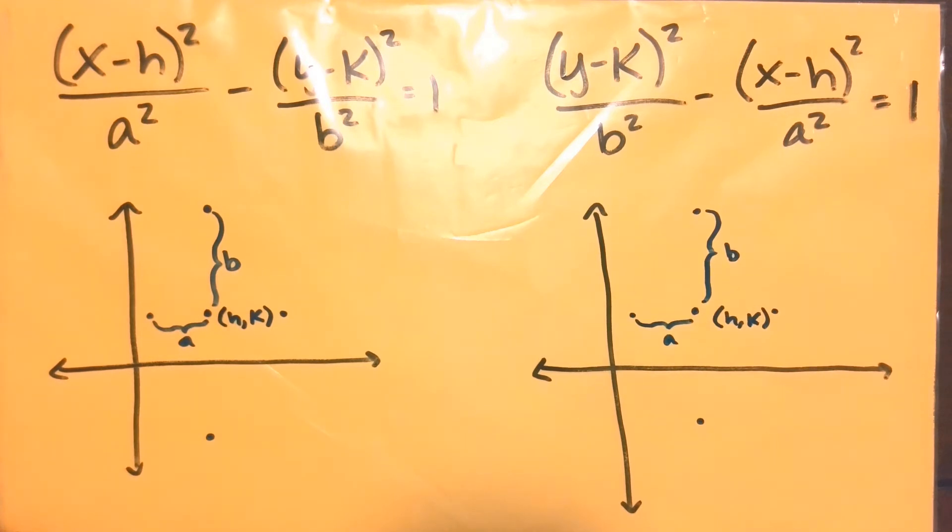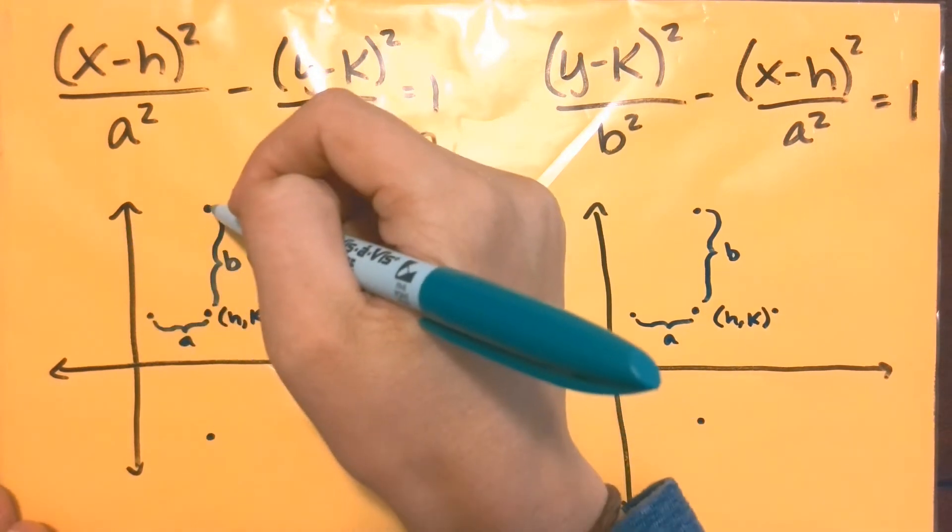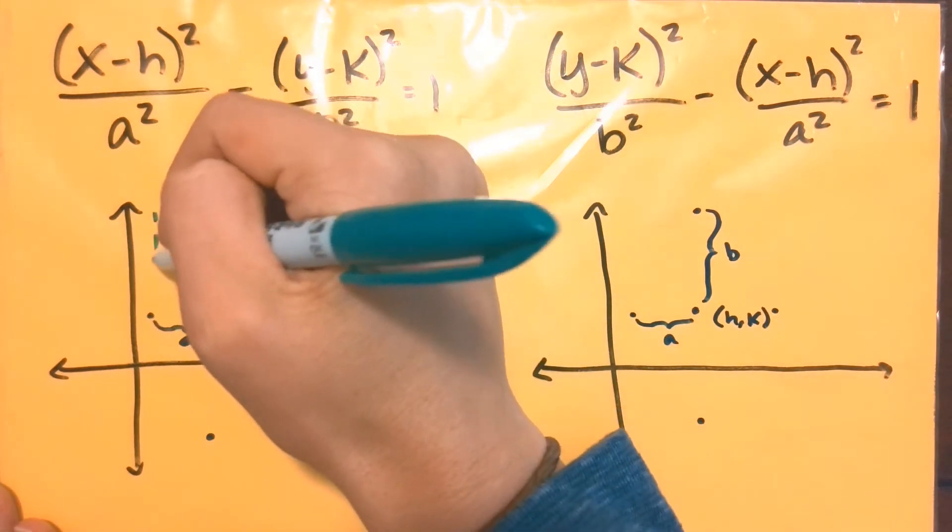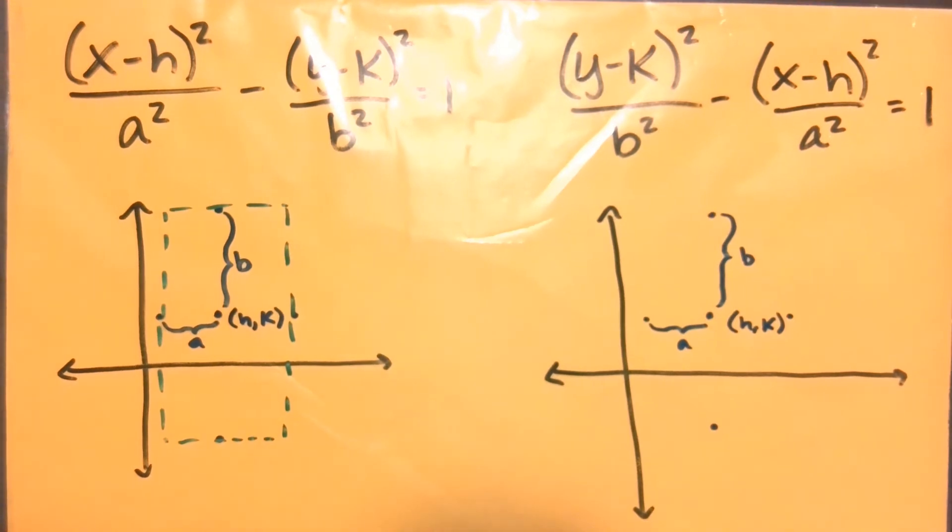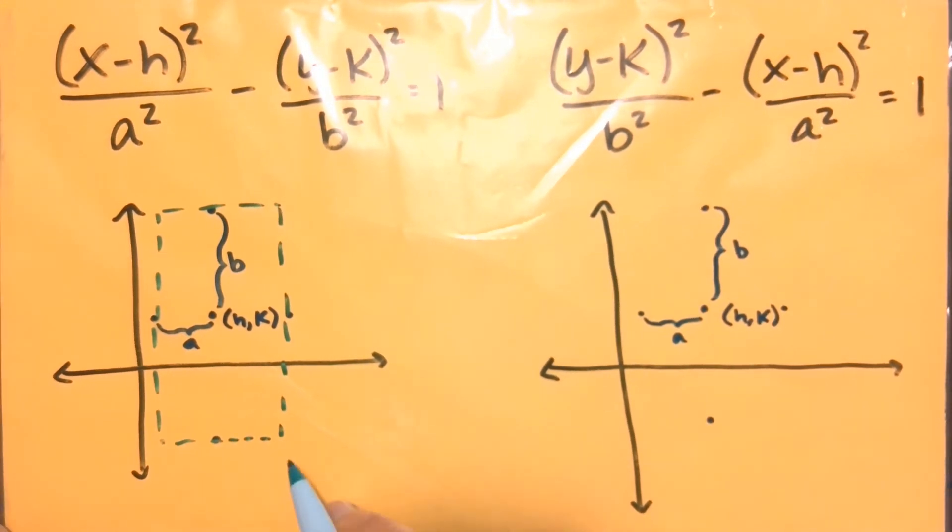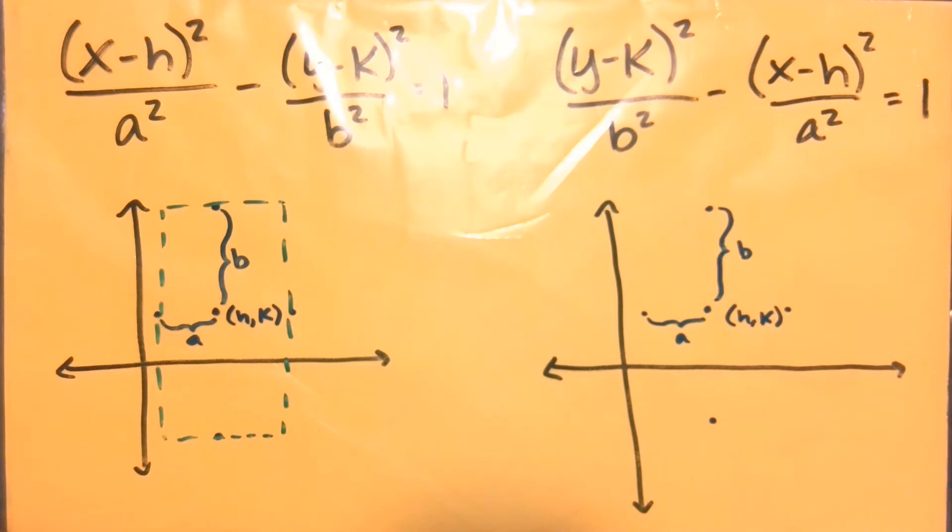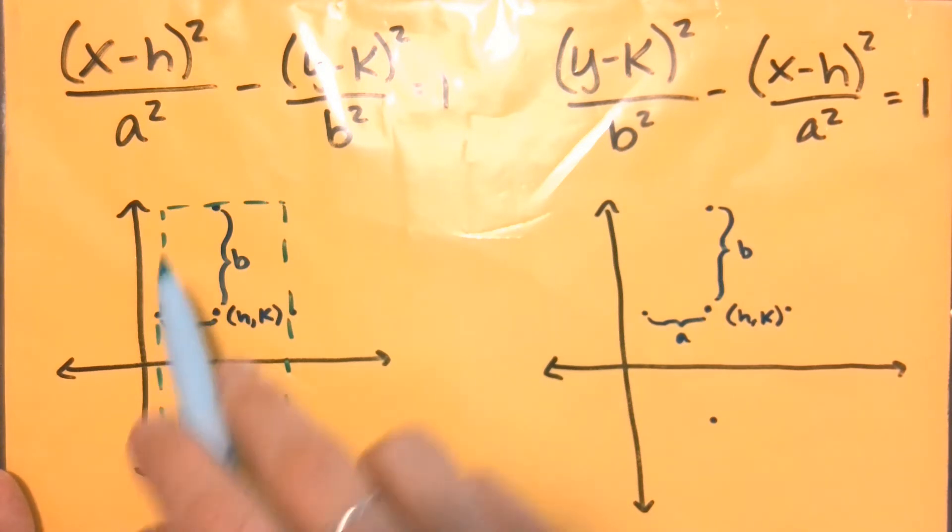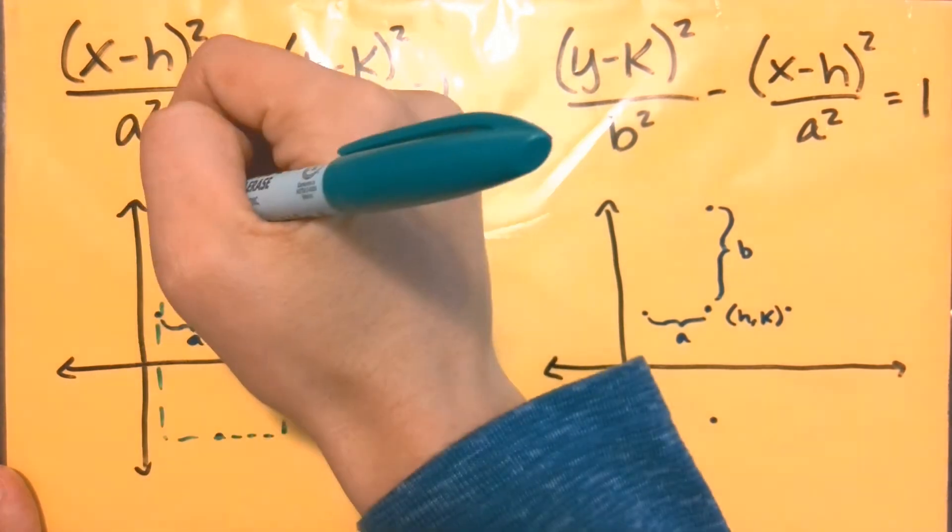So the hyperbola is very different in what it looks like. Instead of using these points here to graph the actual hyperbola, we're actually going to use those to draw a box. It could be a square, but typically it's a rectangle, and this rectangle that we're drawing in is simply a guide. It's kind of like for rationals how we draw in an asymptote to be a guide for that function.